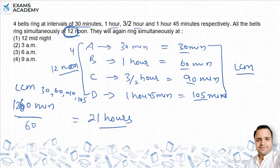But if they rang at 12 noon together, then if we add 21 hours to this, what time will it be? It will be 9 AM. Means at 9 o'clock in the morning they will ring together again.